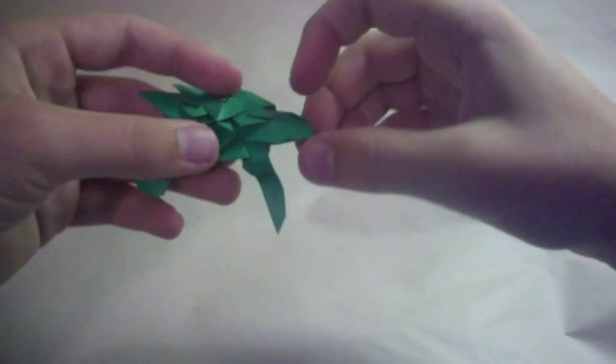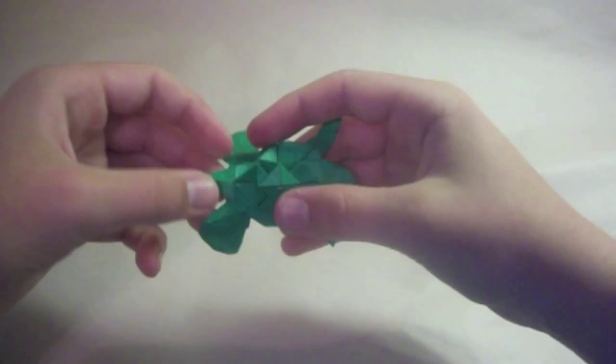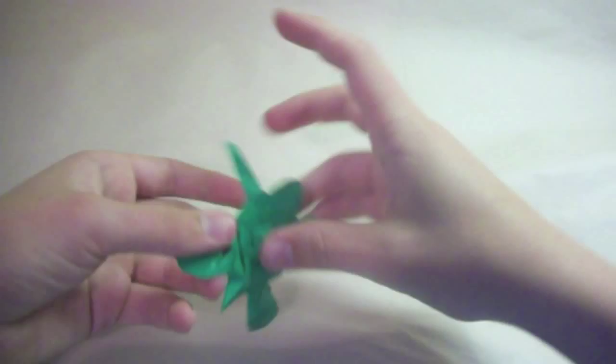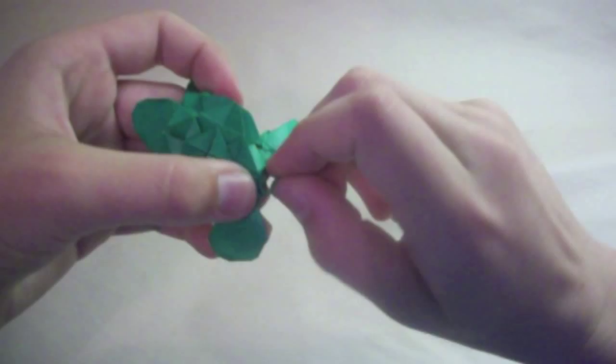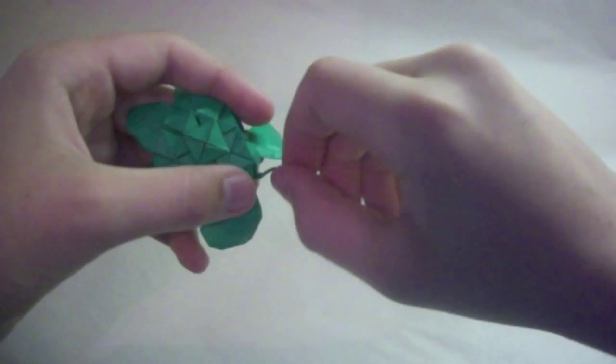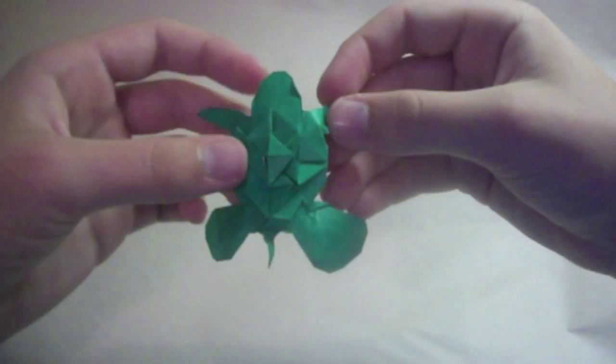Then for the tail, start by folding it in half, then fold it to the side, and then curve it.